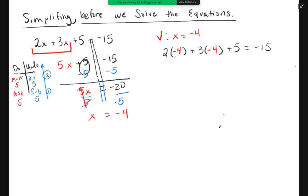Now simplify by following order of operations. 2 times negative 4 is negative 8 plus 3 times negative 4 plus 5 equals negative 15. Negative 8 plus negative 12 is negative 20 plus 5 equals negative 15. Negative 20 plus 5 is negative 15 equals negative 15. And this is true. So your check worked. You are very happy about that.